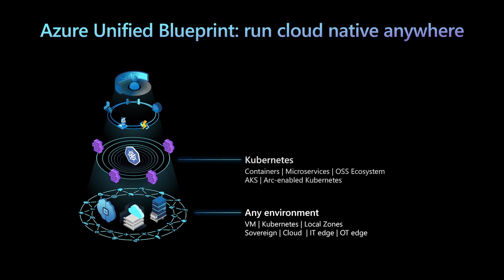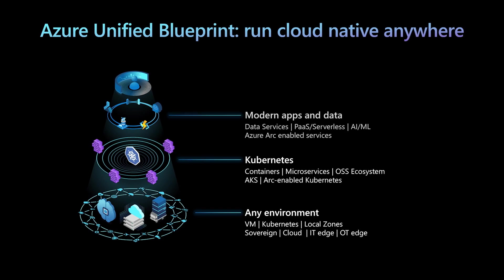For the cloud native app, it's the Kubernetes layer that's key. We are betting on Kubernetes as the common abstraction layer as you build and modernize your applications for portability across the cloud and the edge with containers and microservices. We are investing heavily with both the Azure Kubernetes Service and Arc-enabled Kubernetes, so you have the flexibility as you build native Kubernetes apps. Moving a layer higher in the blueprint, once you have the Kubernetes platform and apps running, you can take advantage of our cloud native services in Azure to build your modern application, leveraging a set of Azure services like data and AI/ML.